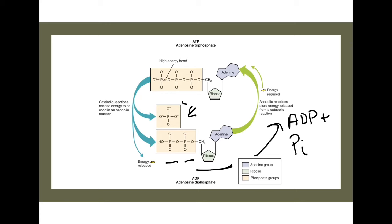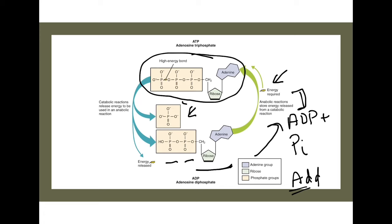For ADP and inorganic phosphate to come together, that would have to be an anabolic reaction — anabolic means to build something up. In that anabolic reaction, a lot of energy has to be put in to make that bond to form ATP. That symbol you see represents a high-energy bond — it takes a lot of energy to put a negative charge next to two negative charges. And so when you actually need to use that energy, you break that high-energy bond and liberate that energy. That breakdown is a catabolic reaction.